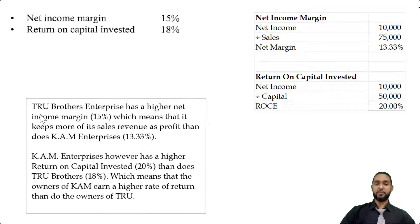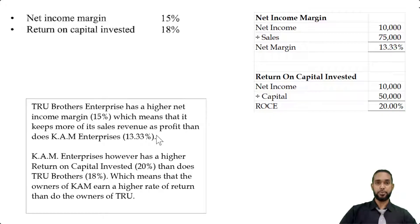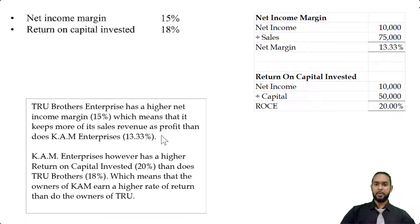Let's get all this information visible. We're seeing True Brothers' ratios: 15% for the net income margin and 18% return on capital invested. KAM Enterprises has 13.33% for net income margin and 20% return on capital invested. Let's talk about the net income margin first. True Brothers has a higher net income margin of 15%, which means it keeps more of its sales revenue as net profit than does KAM Enterprises at 13.33%.